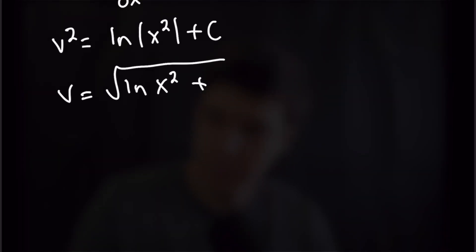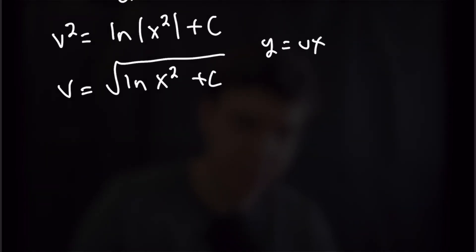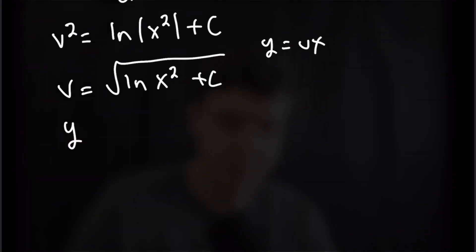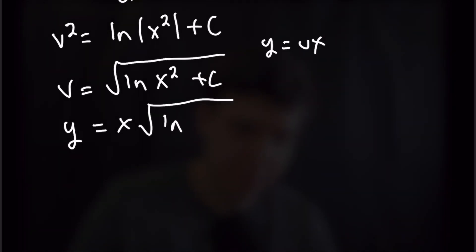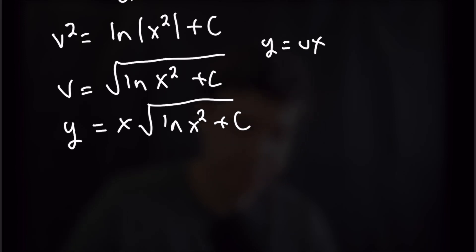We can take the square root and get v is equal to the square root of the natural log of x squared plus c. Then doing our back-substitution, which was y equal to v times x, we get our final general solution: y is equal to x times the square root of the natural log of x squared plus c. And that finishes this problem off.